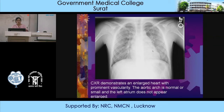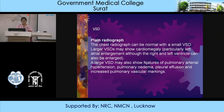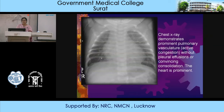VSD: chest radiograph can be normal with a small VSD. Larger VSDs may show cardiomegaly, particularly left atrial enlargement, although the right and left ventricle can also be enlarged. A large VSD may also show features of pulmonary arterial hypertension, pulmonary edema, pleural effusion, and increased pulmonary vascular markings. This case demonstrates prominent pulmonary vascularity bilaterally (active congestion), with no pleural effusion or consolidation and a prominent heart.